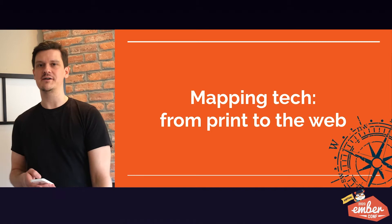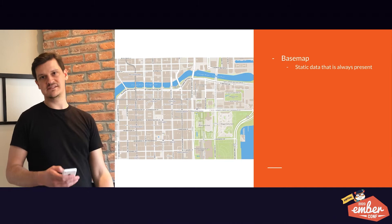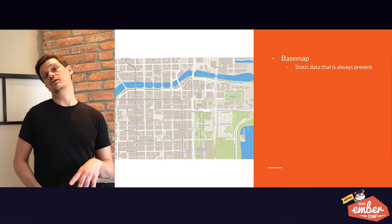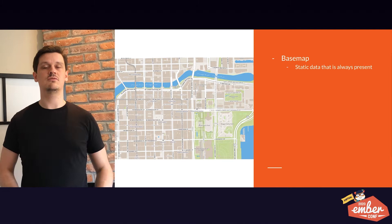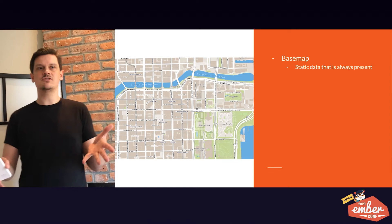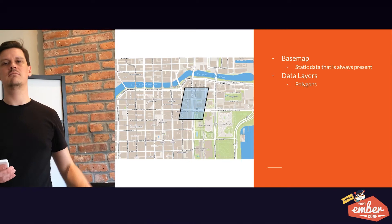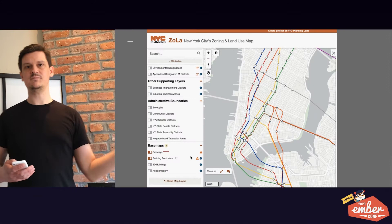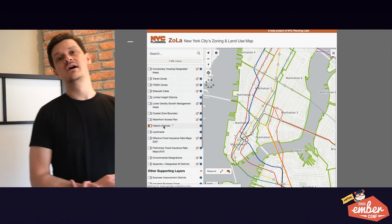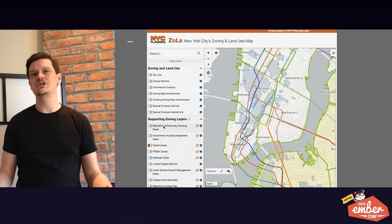Mapping tech from print to the web. What is a web map composed of? Well, first we have a base map, which is always present — it's a contextualizer. It orients the viewer to where they are in space: streets, bridges, rivers, bodies of water, parks — typically what a base map is. Then you have data layers, which are the focal points of your map: polygons, lines, points. That's what you're seeing with Zola — the light gray and blue contextual map of Manhattan, and then you can turn on these data layers, which are all these colorful zones. Kind of looks like a bowl of Fruit Loops — a little too colorful.